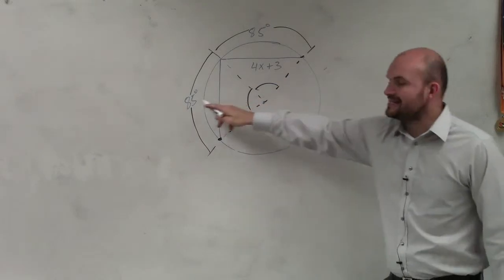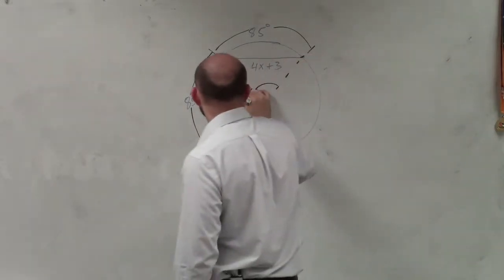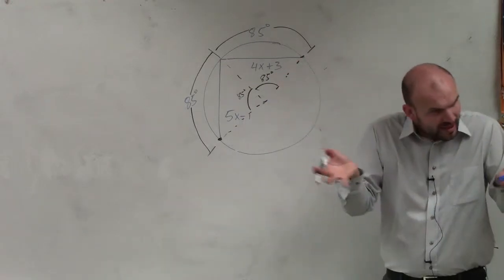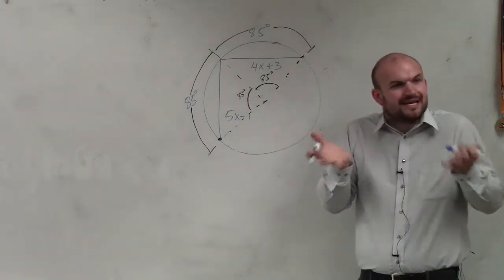Right? If that's 85 degrees, then this is 85 degrees. And that's 85 degrees, right? They come from the arc. The measure of the arc comes from that central angle.